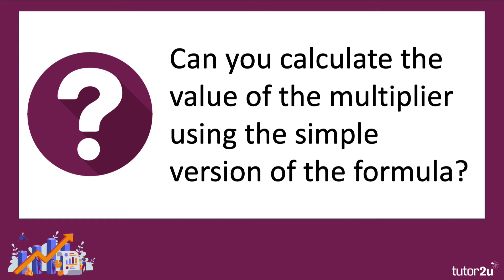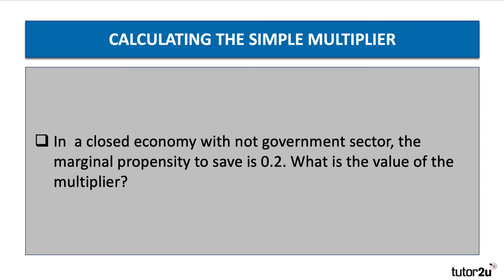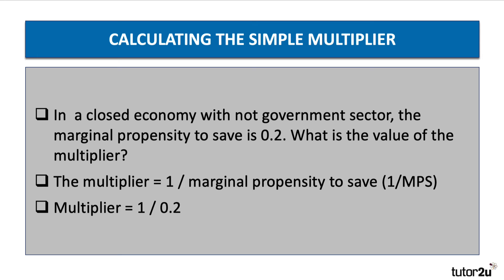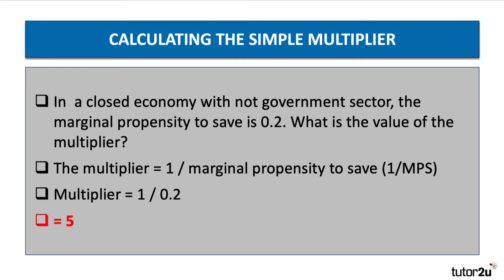Here's an example. In a closed economy with no government sector, the marginal propensity to save is 0.2. What's the value of the multiplier? The multiplier is one divided by the marginal propensity to save — that's 0.2 — so the multiplier is one divided by 0.2, which equals five. That's a high value because there is only one leakage, and that leakage is 0.2.